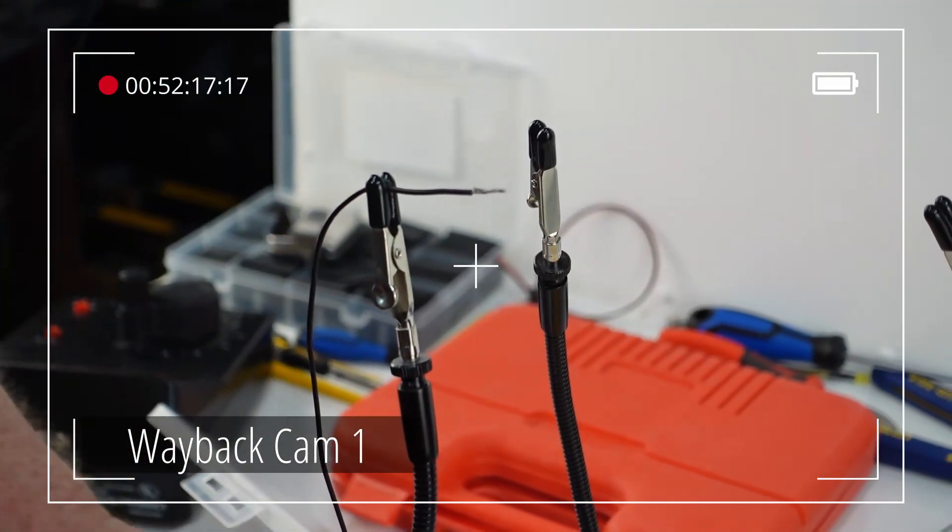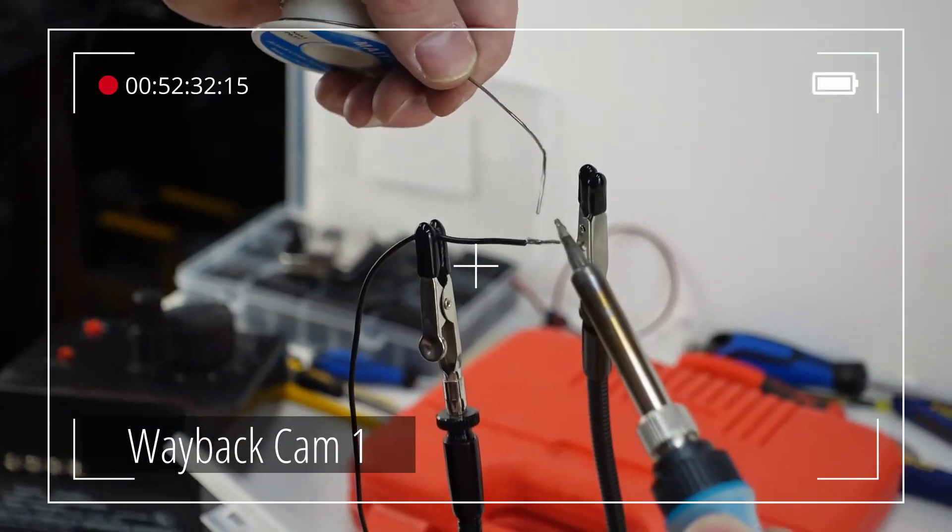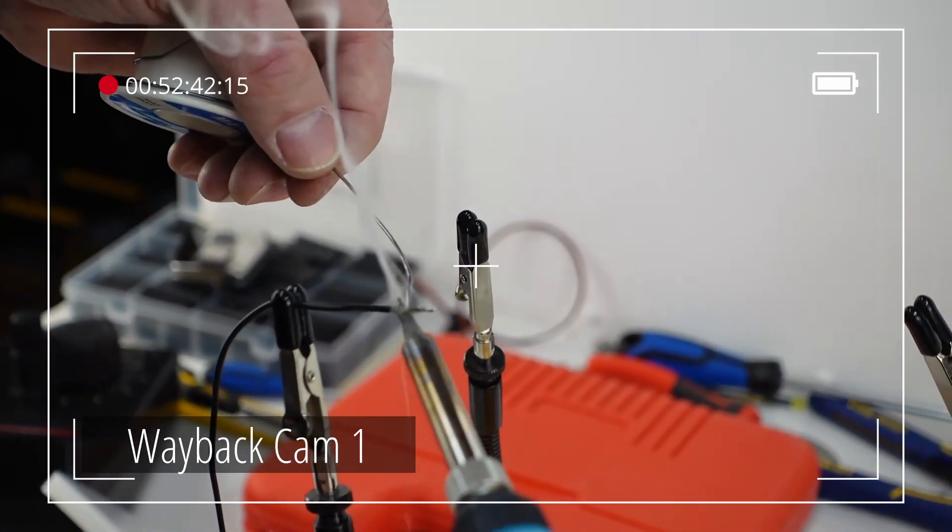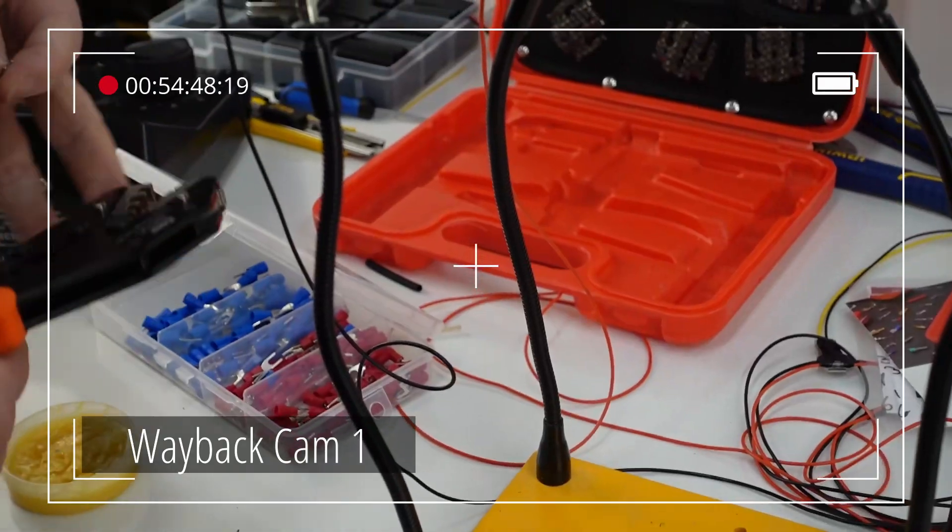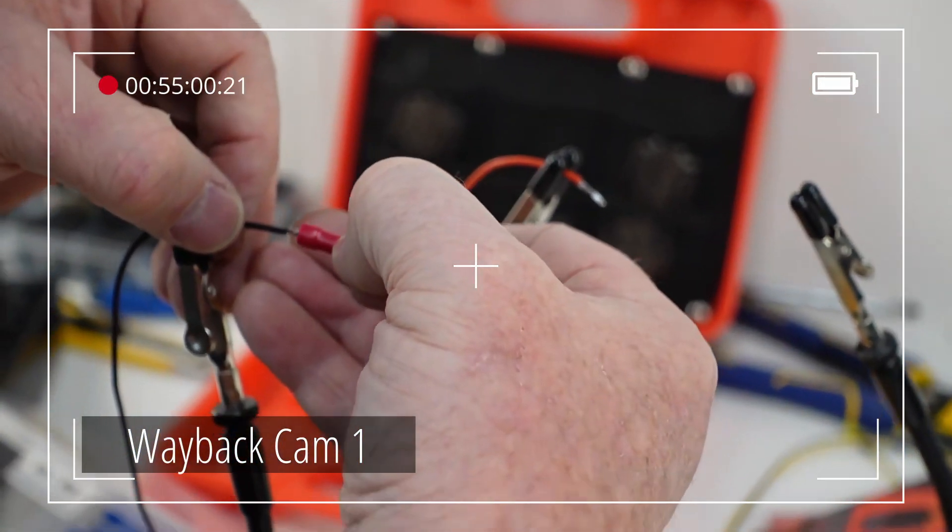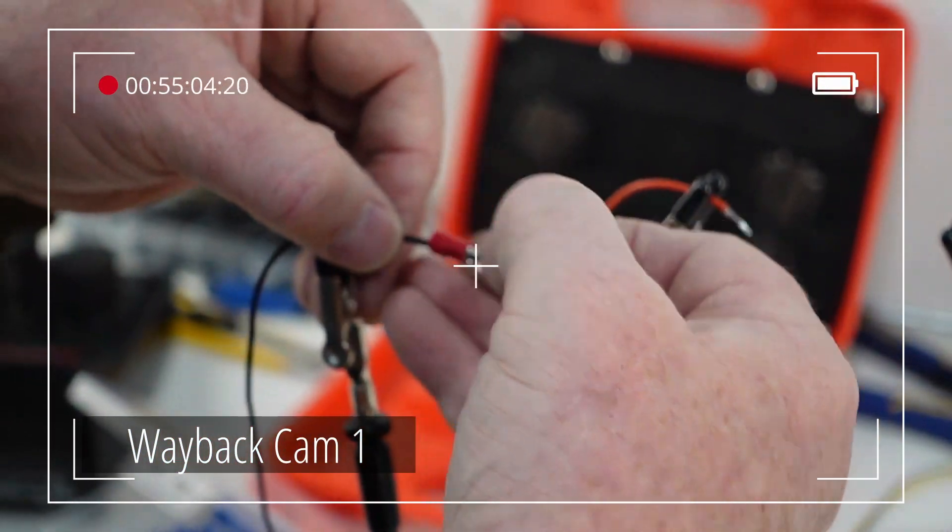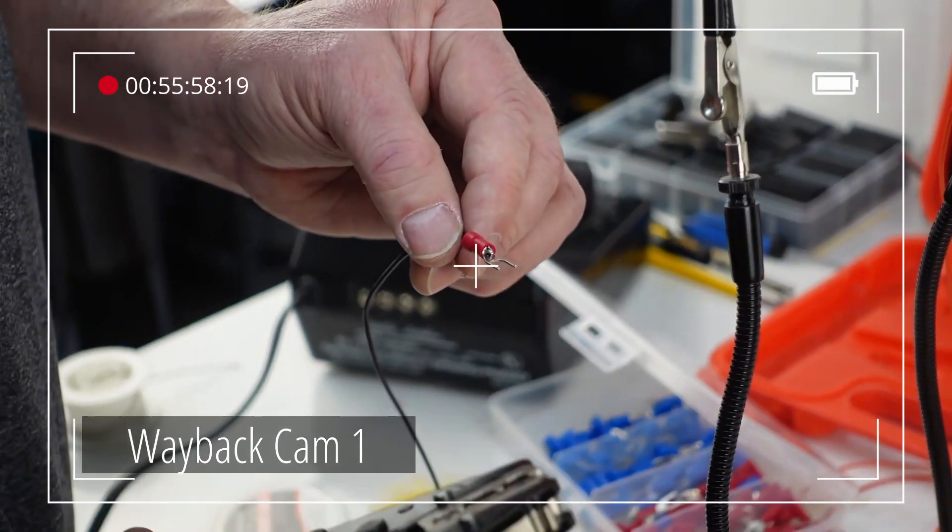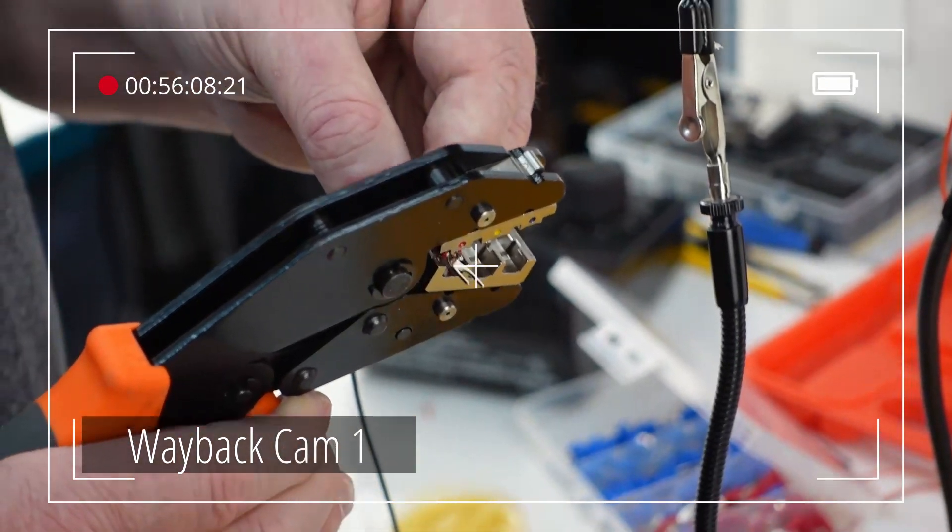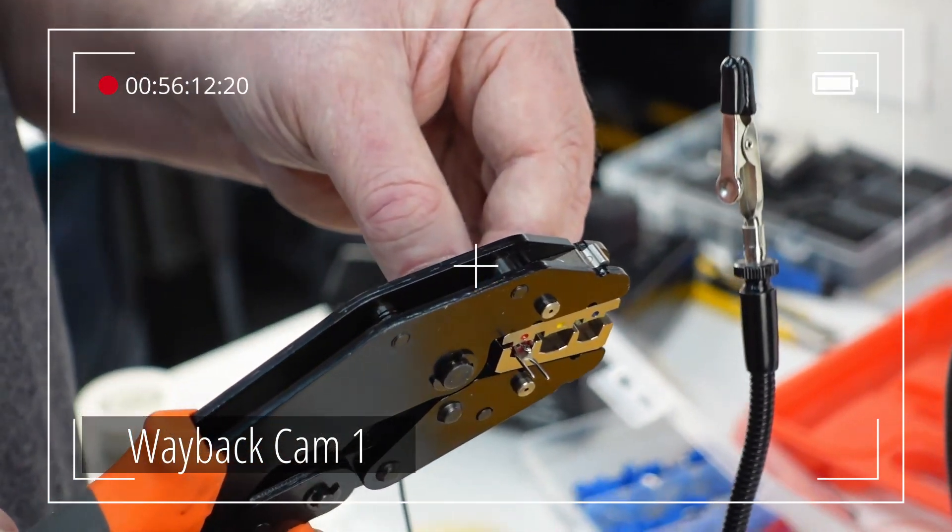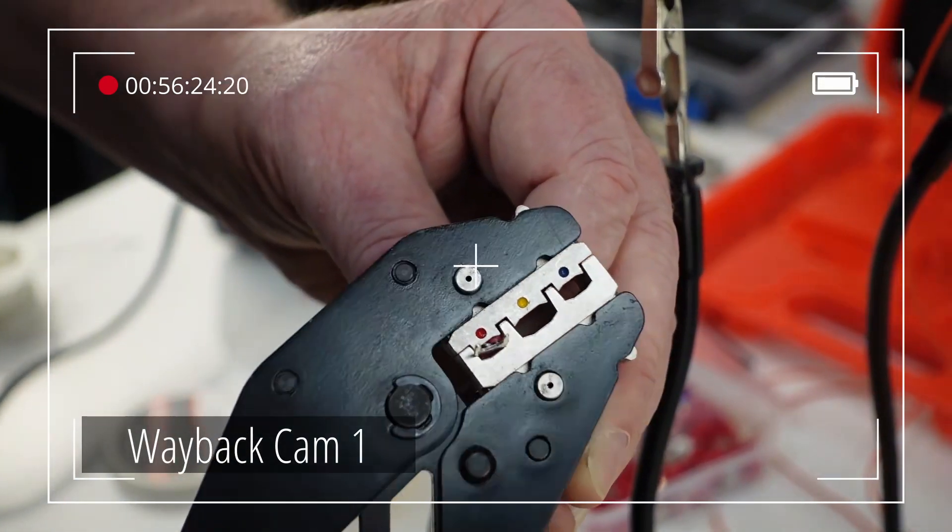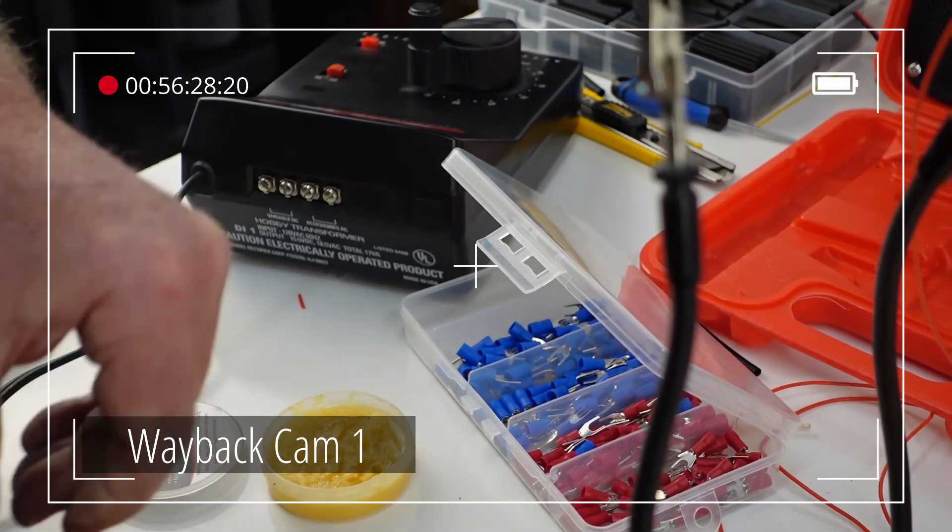And then I'm going to crimp it on there and see what kind of luck we have with that. Anyway, so let's just go ahead and quickly tin this wire here. And then we'll put our fork connector on here. That's looking pretty good. And then we're going to pop it in the connector here. I mean, in the crimper. I think that's where I want it right about there. Let's give it a crimp. Right to the bottom.